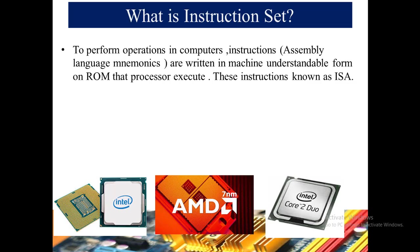The instructions written on ROM — read-only memory — are non-volatile, meaning that during a power failure the instructions on ROM remain fixed and permanent; they are not erased. RAM, on the other hand, is erased on power failure. So the instructions on ROM are permanent, and the processor knows what it has to do to perform a specific task according to instructions given by the computer software.